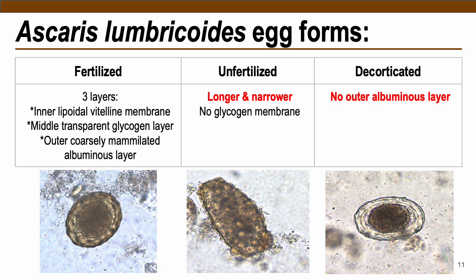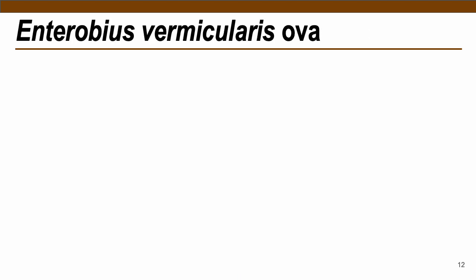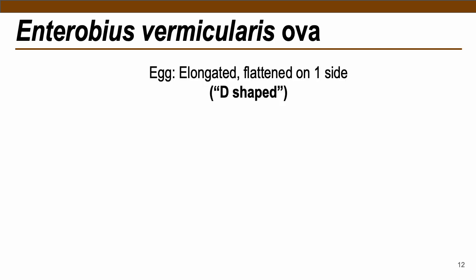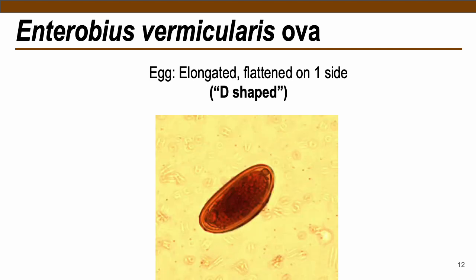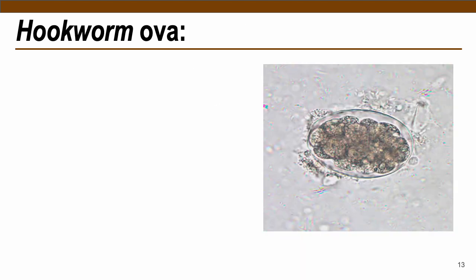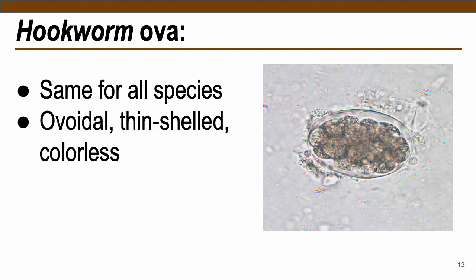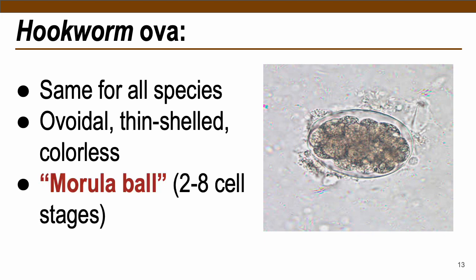Rather, the fertilized Ascaris egg contains three layers — kindly take note of the outer mammillated albuminous layer. For Enterobius, this does not fit the criteria because it is elongated and flattened on one side — other sources say this is the D-shaped ova. For Ancylostoma duodenale or hookworm, these are ovoidal with a thin shell which are colorless, and the best diagnostic for hookworm ova is the presence of a morula ball with two to eight cell stages.